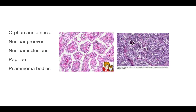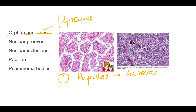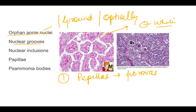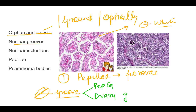The features of papillary carcinoma include: first, papillae with a fibrovascular core. Second, Orphan Annie nuclei — also called ground glass or optically clear nuclei — where each nucleus appears very clear, showing a white portion. Third, nuclear grooves: a longitudinal line running through the nucleus. Nuclear grooves are also seen in granulosa cell tumor of the ovary.